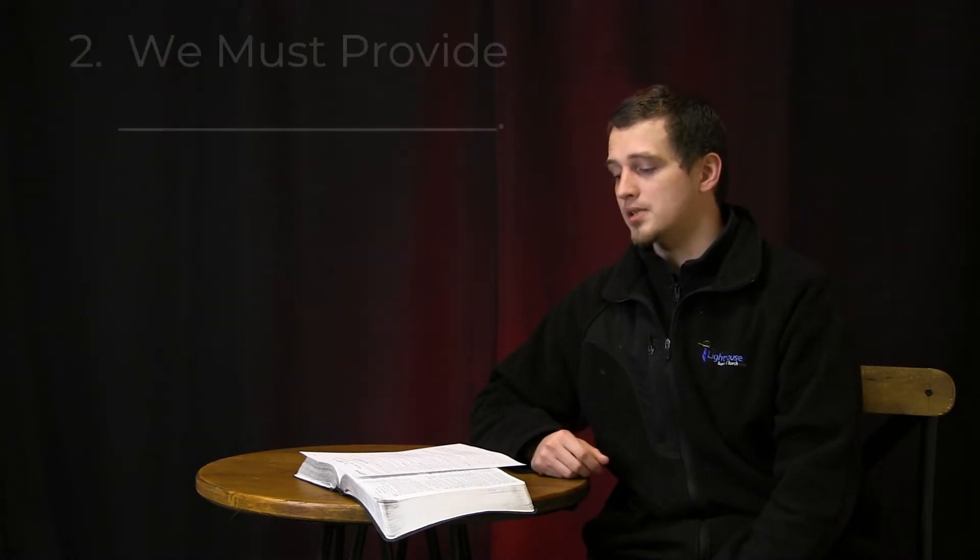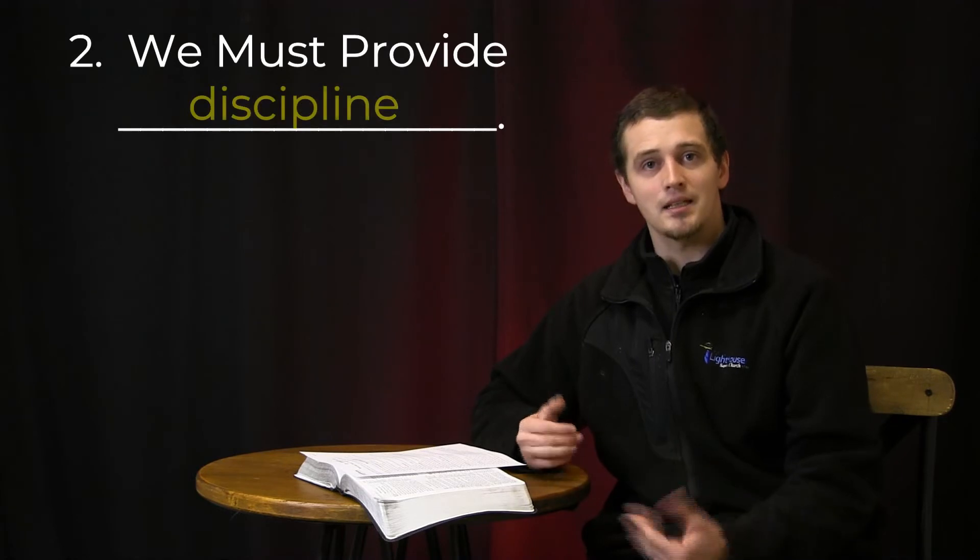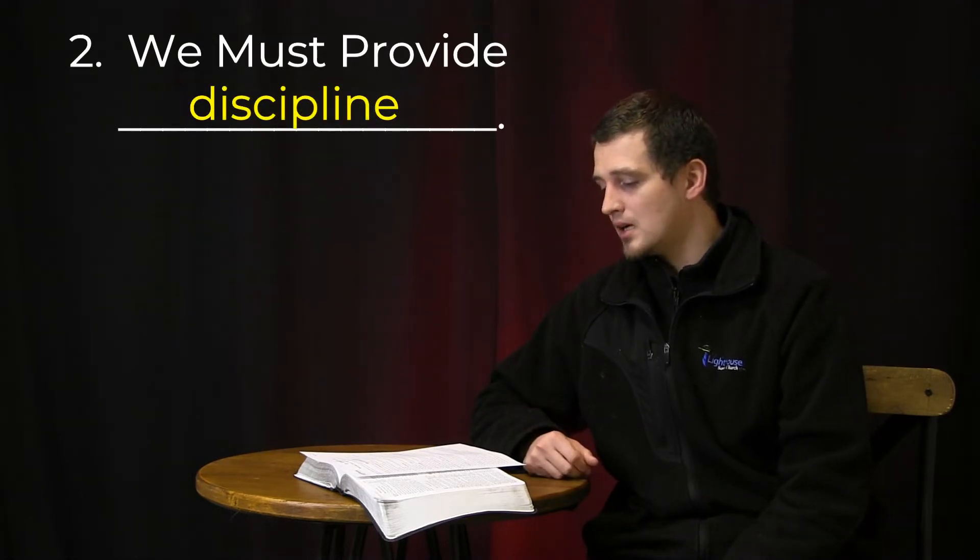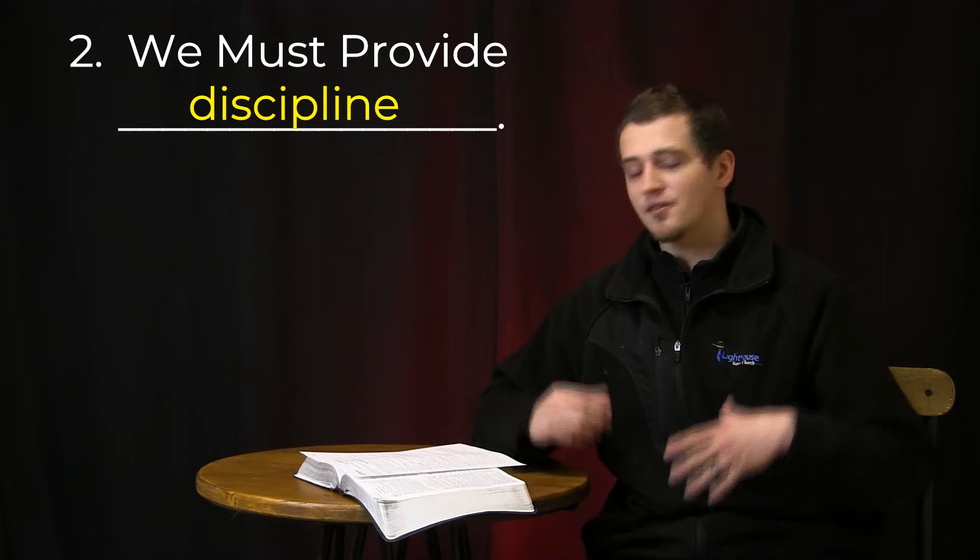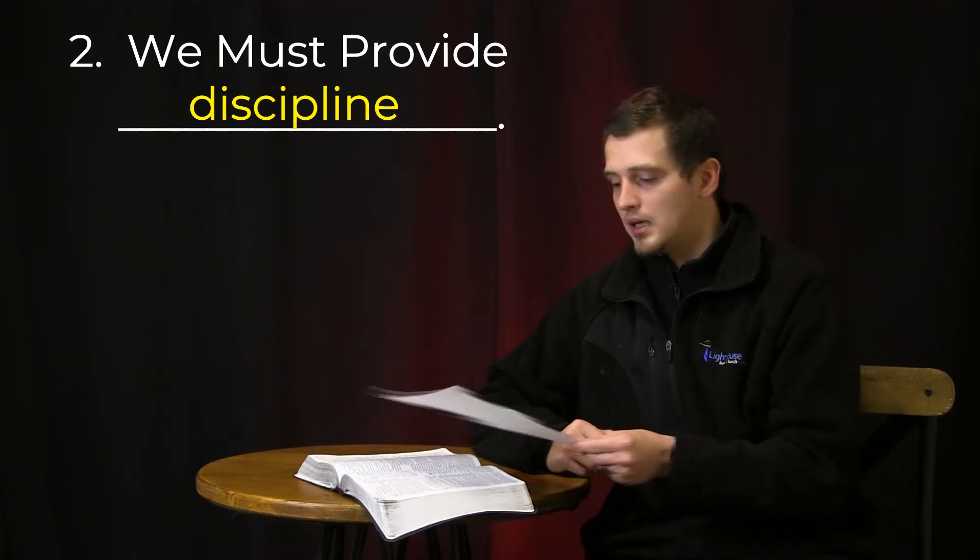Now, number three, we must provide discipline. That comes along with being a parent, is discipline. Proverbs 22:14 says, foolishness is bound up in the heart of a child, but the rod of correction shall drive it far from him. So, the Bible tells us we are to discipline our kids. I personally believe that includes, at times, physical discipline. That includes spankings or whatever. That includes them to realize, no, this is not going to be tolerated. This is going to have to stop.